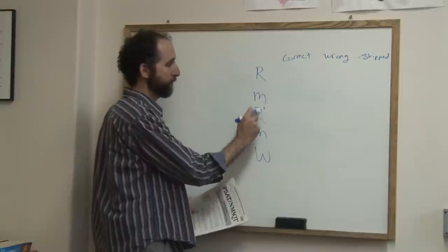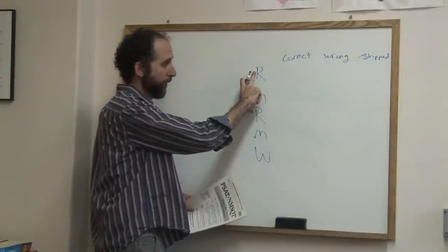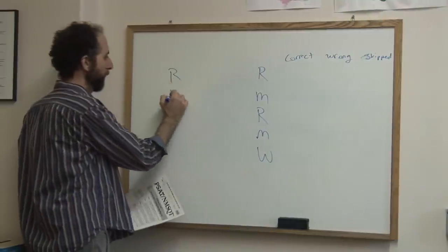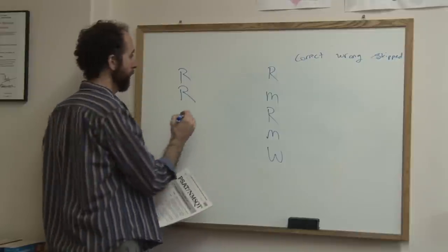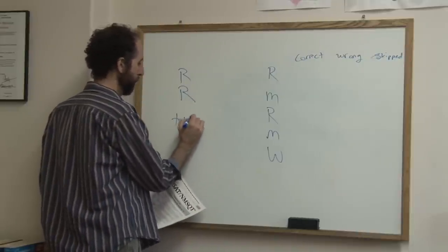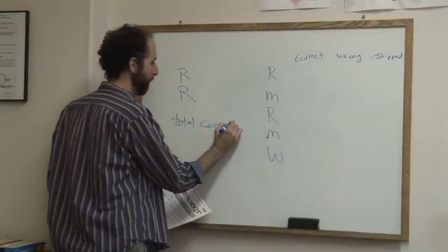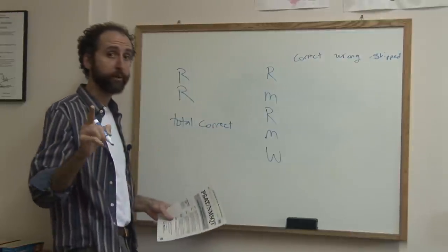For the reading sections, the two reading sections, you're going to add up how many you got right. You're going to add up how many you got correct and put total correct.